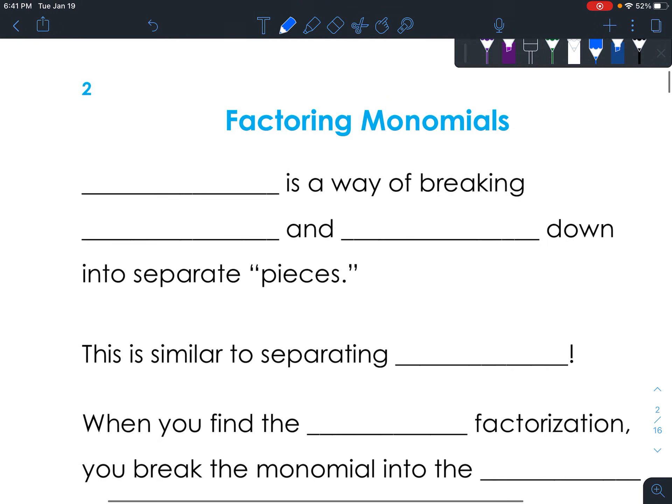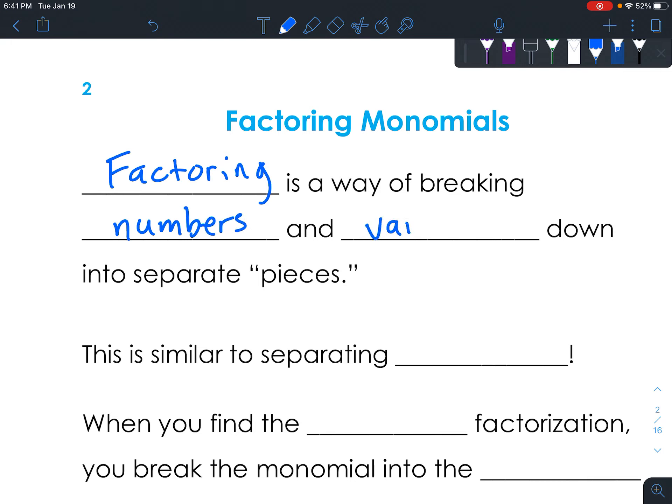The first section is called Factoring Monomials. We already talked about what monomials are in the last unit. Now factoring is a way of breaking things apart. So it's a way of breaking numbers and variables, which is basically a monomial, down into separate pieces.